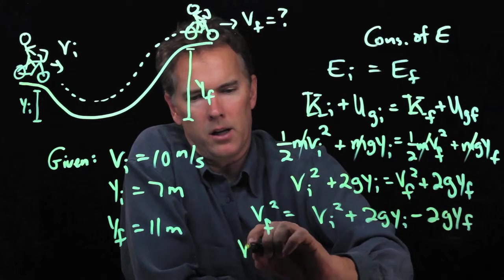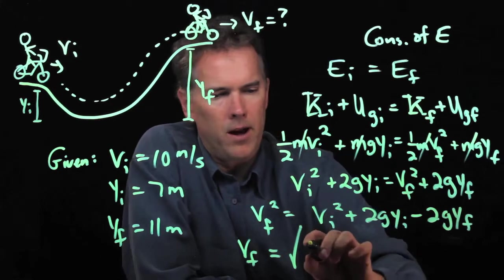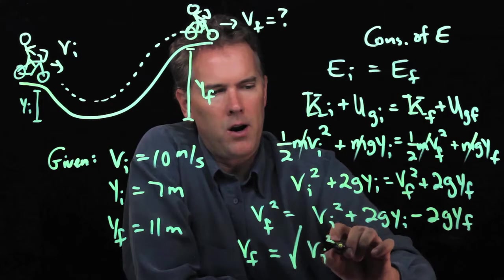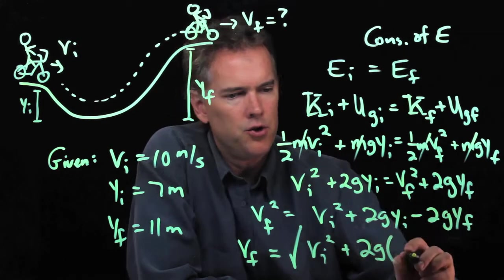And now we can simplify and take the square root. What do we have? We have Vi squared, and I have some common factors here, so I can factor out a 2g.